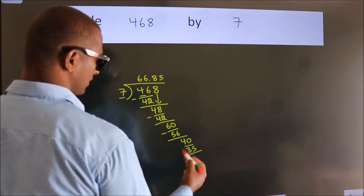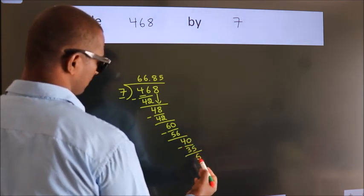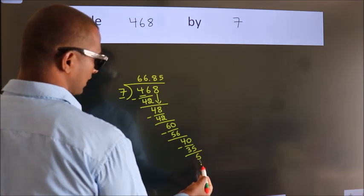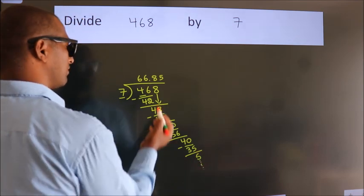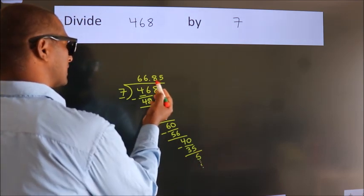Now we subtract. We get 5. And the division continues. It is enough if we do up to two decimal places.